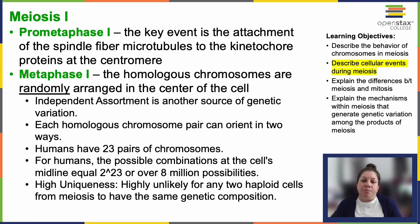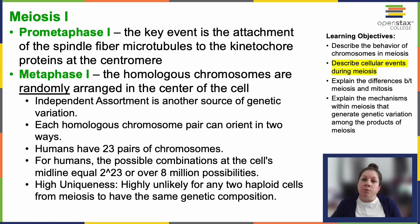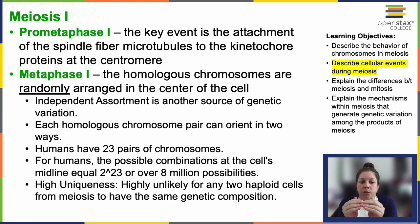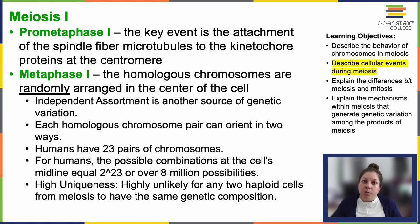During prometaphase I, a really important event is the attachment of spindle fiber microtubules to kinetochore proteins located at the centromeres, just like we saw in mitosis. Microtubules originate from the centrosome at opposite poles of the cell and extend towards the cell center. By the end of prometaphase I, each tetrad is connected to microtubules from both poles — one homologous chromosome attaches to one pole while the other attaches to the opposite pole. These homologous chromosomes remain joined at the chiasmata, and the nuclear membrane has fully disintegrated at this point.